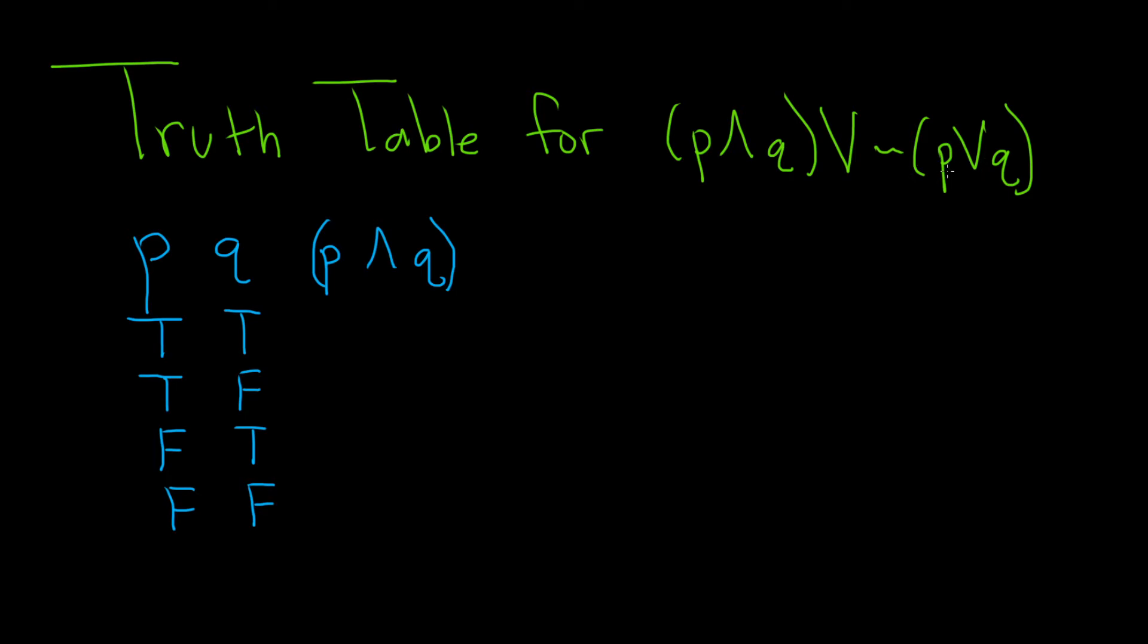And we need to get not P or Q. We need to get this statement here. So we first need to get P or Q. And then we need to look at the negation of that. So the negation of P or Q. And then now, finally, we can get the very last statement, which I'm going to write it over here. It's going to be P and Q or not P or Q.